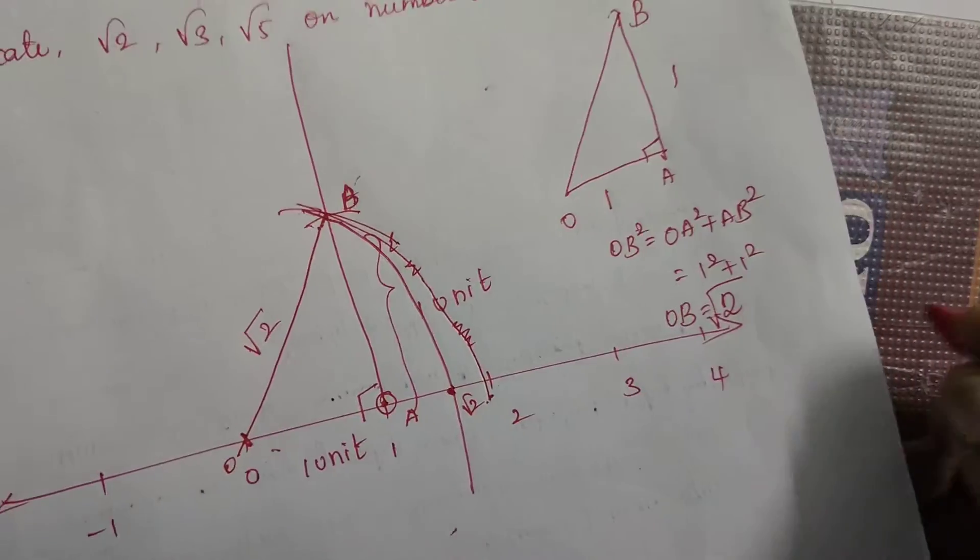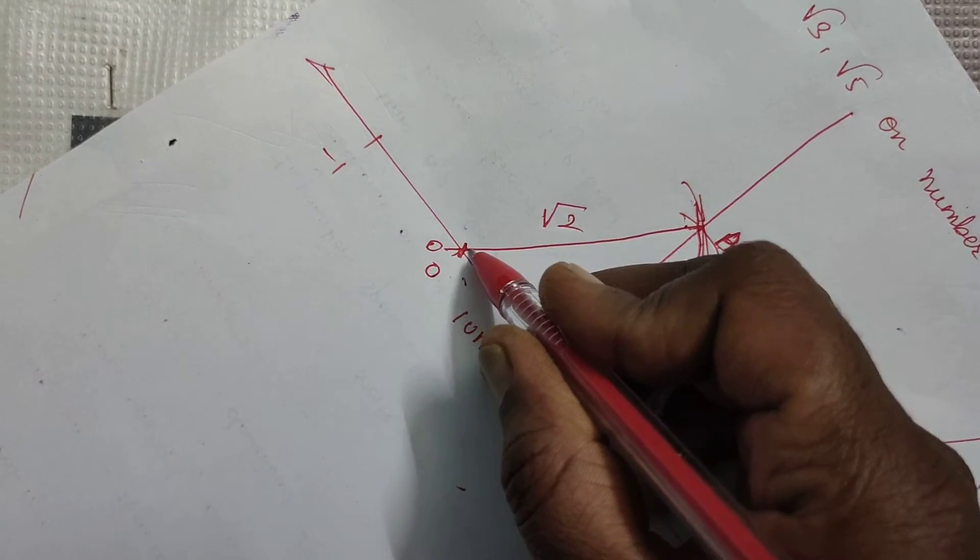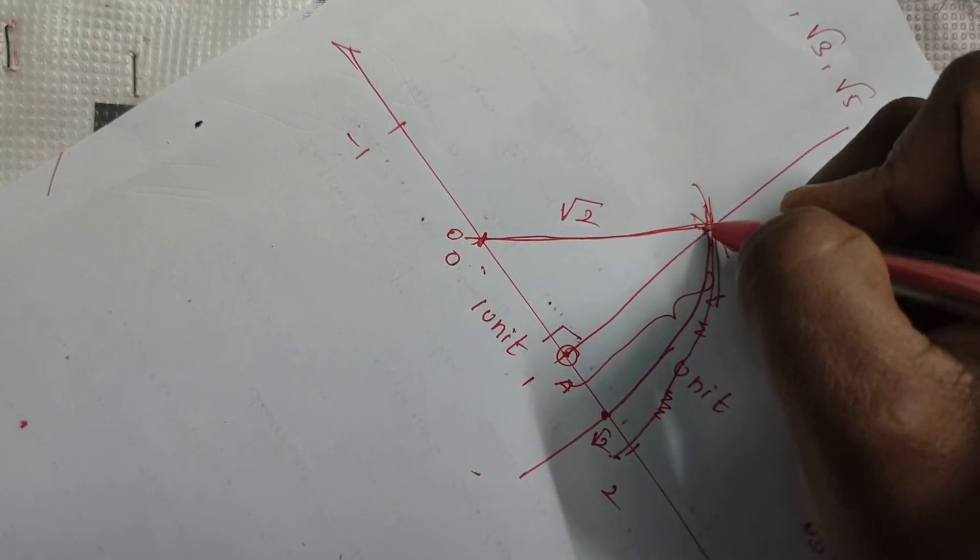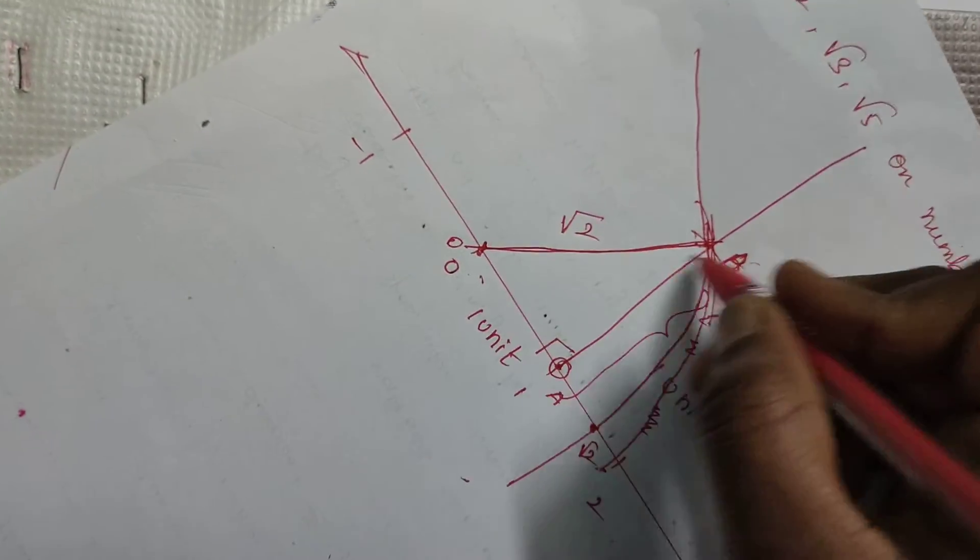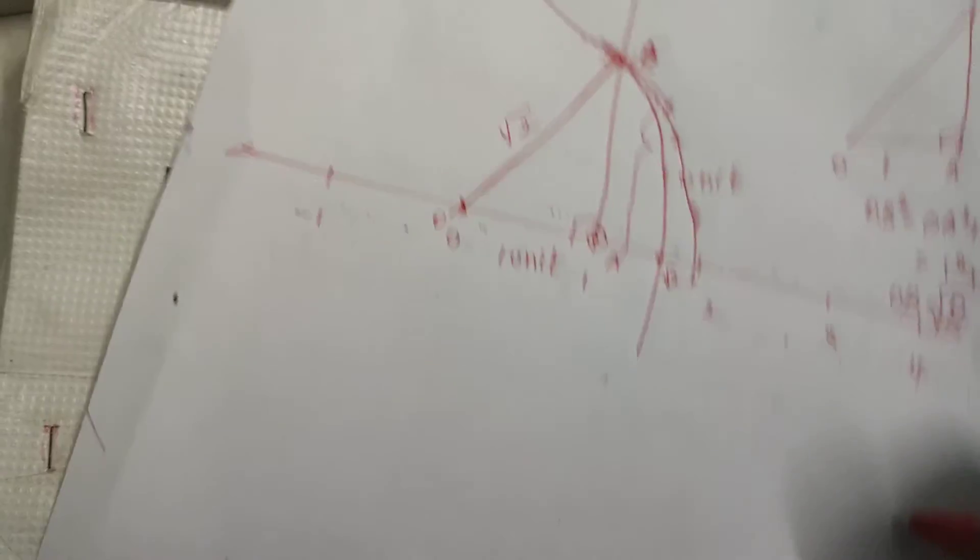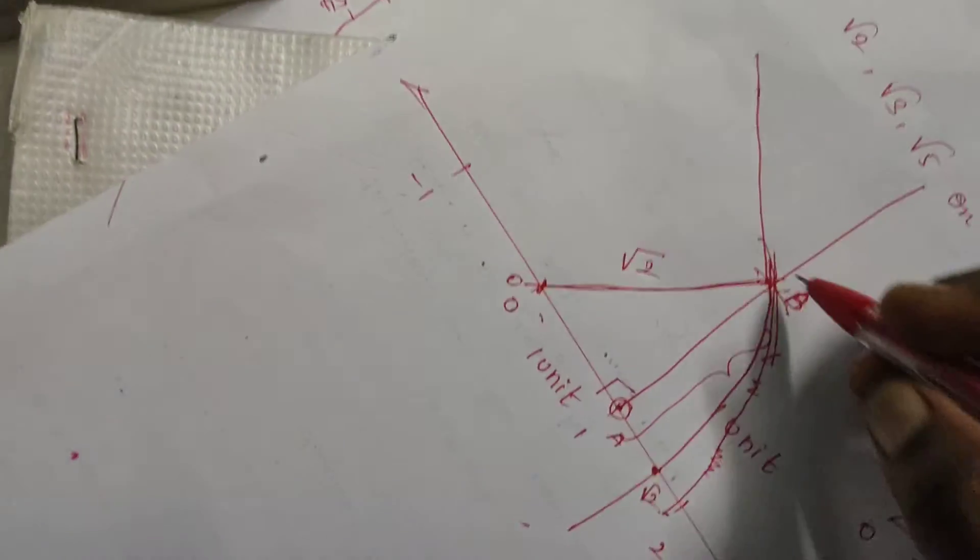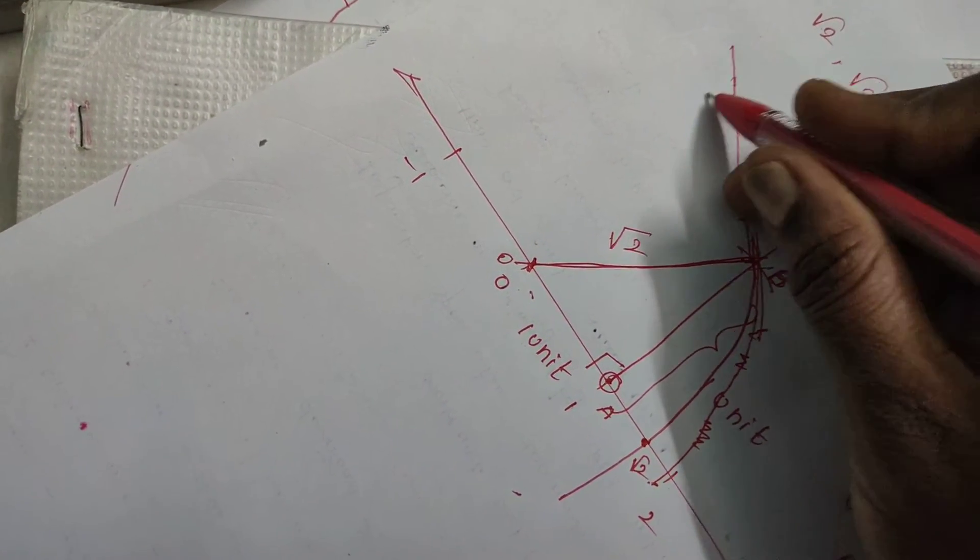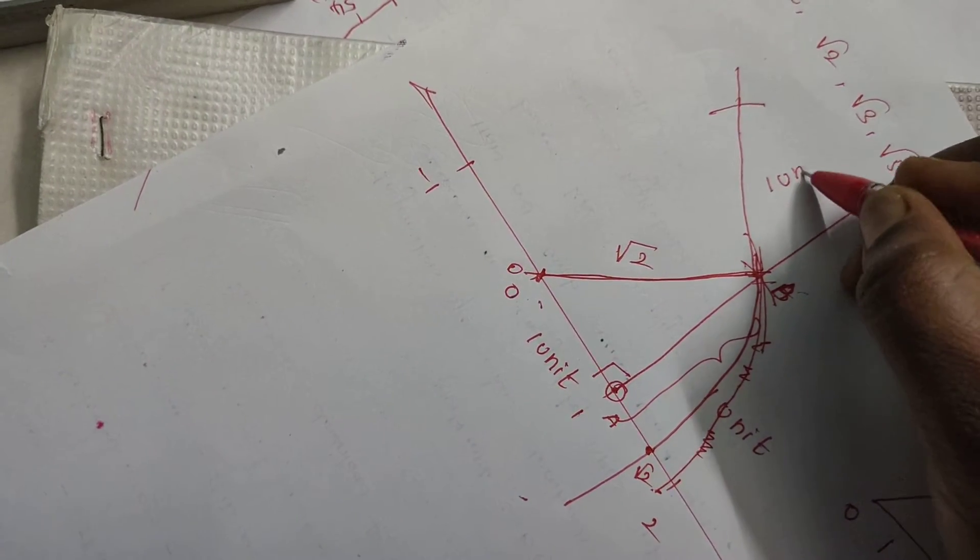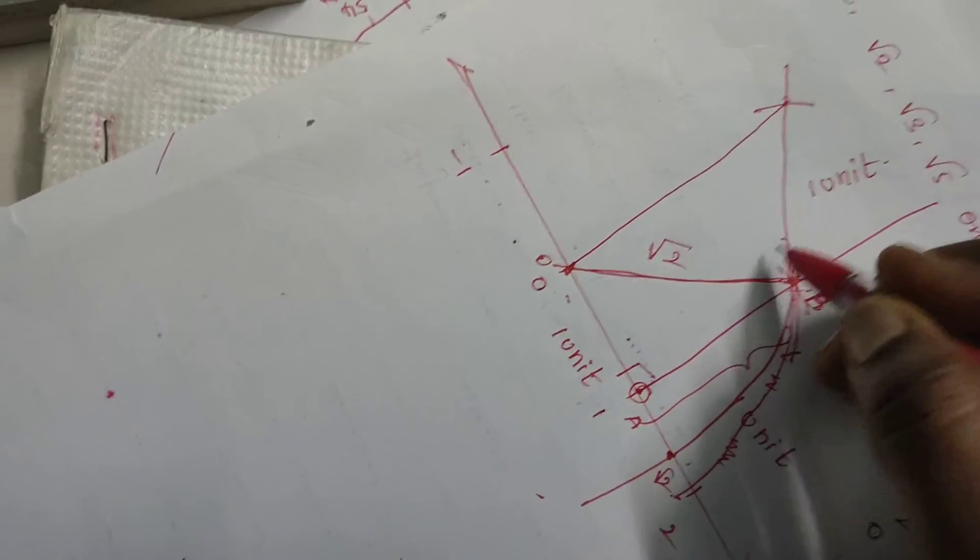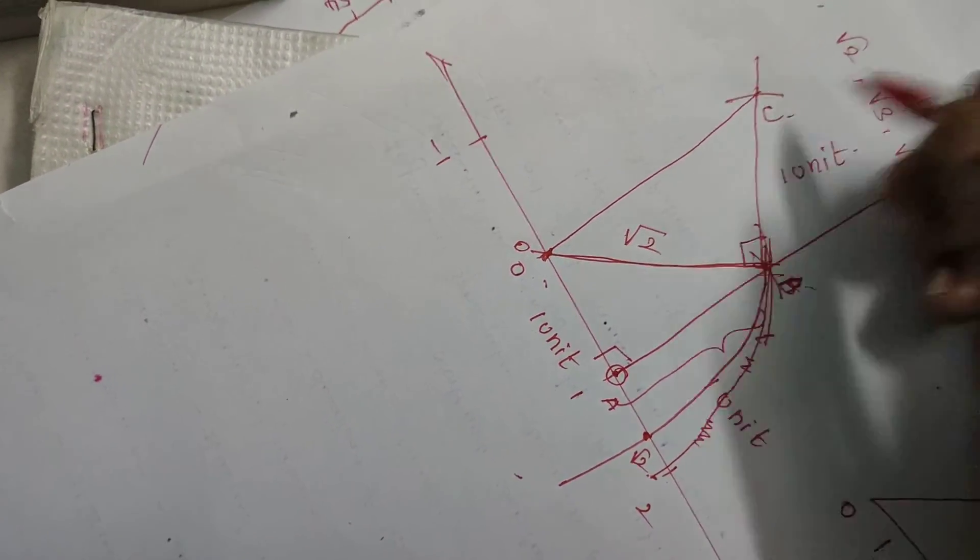Next, to find how to locate root 3, what you do is take this line. Again, you draw a line perpendicular to this line OB. From here, draw a perpendicular line. Now again, you measure 2 centimeter, that is 1 unit according to scale and cut an arc over here. This is 1 unit. Join these two. Here, this is a 90 degree. Let this be named as C.